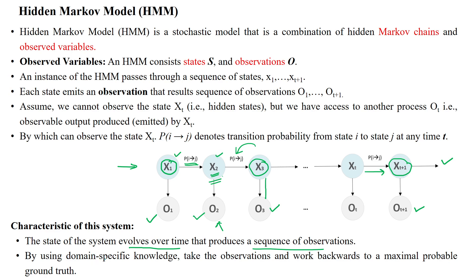That is one of the characteristics of this system. Another characteristic is that using domain-specific knowledge we consider the observations, then work backwards towards the system. In this backward direction, we can identify the hidden state by using the maximal probable ground truth value.